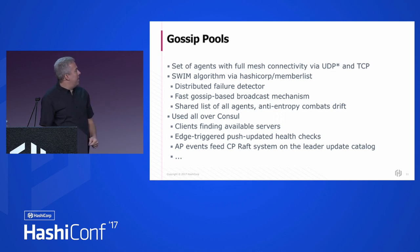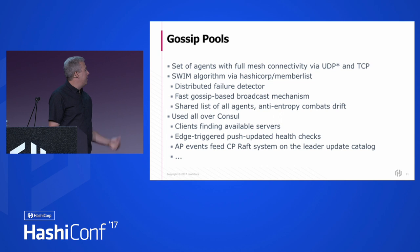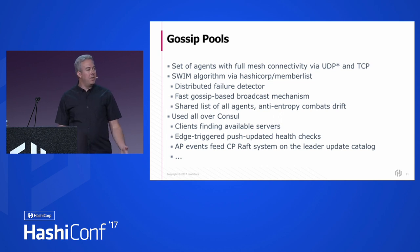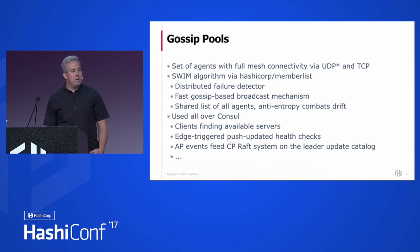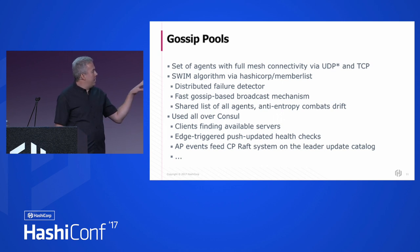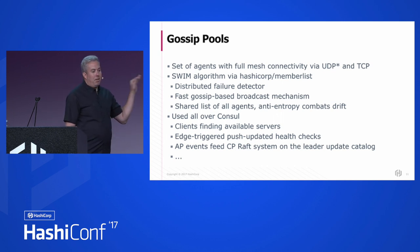There's also a broadcast mechanism, so you can get information out to all the machines in the cluster really quickly. And there's a shared list of all the agents — they can know, in an eventually consistent way, who's in the cluster, who's coming, who's going. There's an anti-entropy process, so the drift gets cleaned up and they all end up in the same state. This is used all over console, including for client agents to discover where the console servers are.